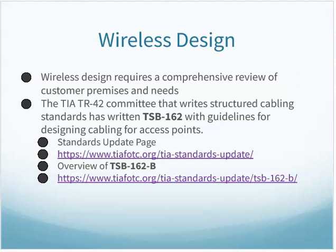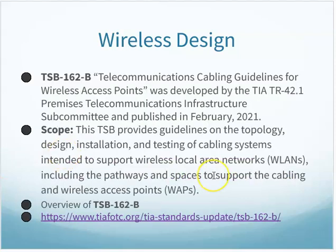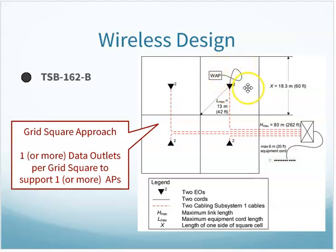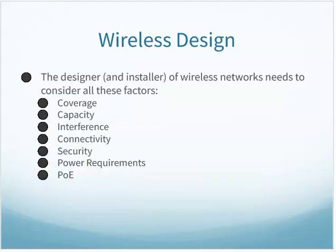There's a structured cabling standard for this: TSB-162, a guideline for designing cabling for access points. What it boils down to is planning that for every grid space — roughly 60 feet by 60 feet — you should have a cable drop so you can plug an access point in. You might be able to move the AP around depending on best coverage. On a big convention floor, divide it up and plan cable drops and outlet boxes in those areas.